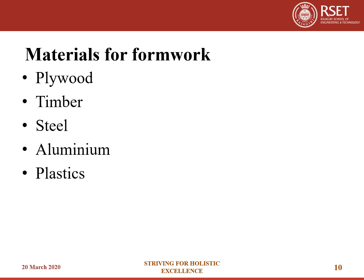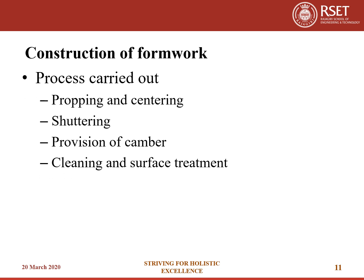Different materials that can be used for making formwork include plywood, timber, steel, aluminium and plastics. The processes carried out in the construction of formwork include: propping and centering, where props may be of steel, timber or otherwise — pillars made of brick masonry in mud mortar are also sometimes used as props; shuttering, which can be made of timber planks or panels by fixing plywood or timber frames or by welding steel plates to angle framing; and provision of camber — since a certain amount of deflection is unavoidable, an upward camber is given to horizontal members of the concrete structure to counteract deflection.